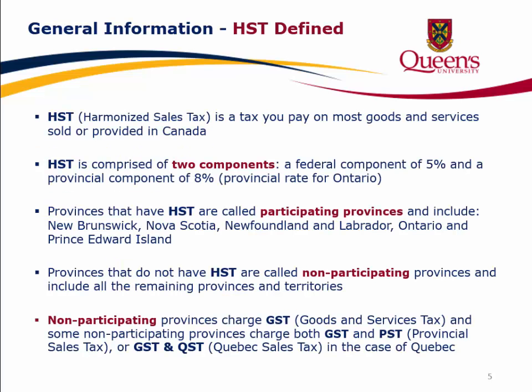HST, or Harmonized Sales Tax, is a tax you pay on most goods and services sold or provided in Canada. HST is comprised of two components: a federal component of 5% and a provincial component of 8% — the provincial rate for Ontario.